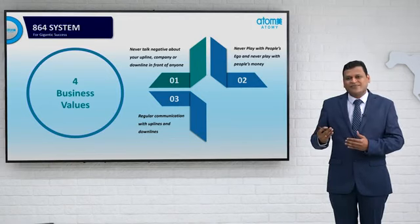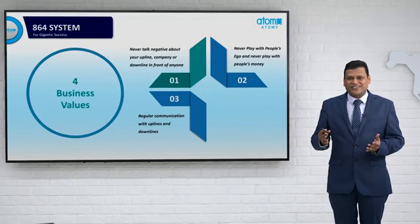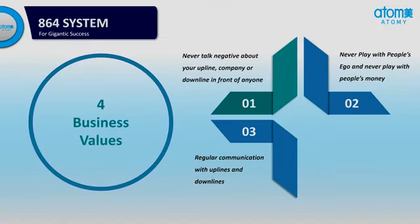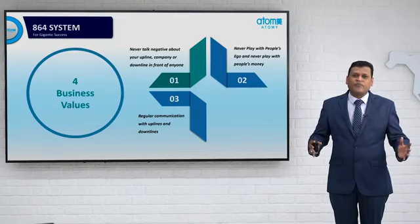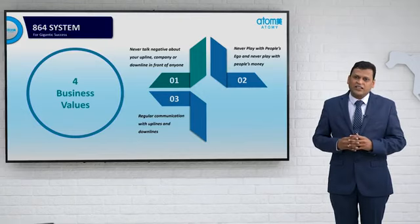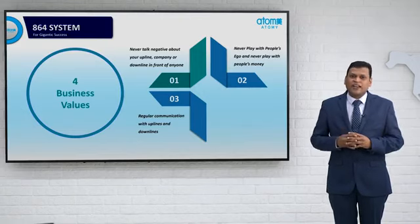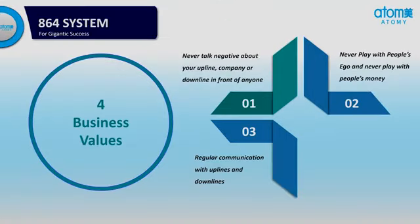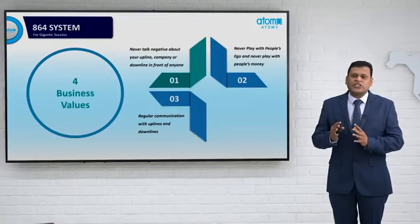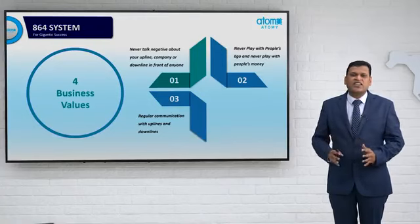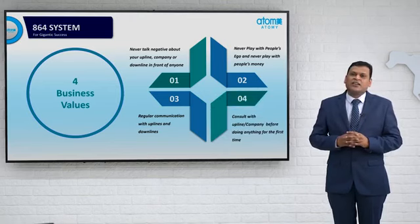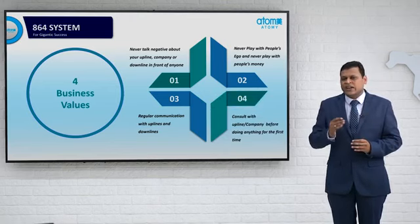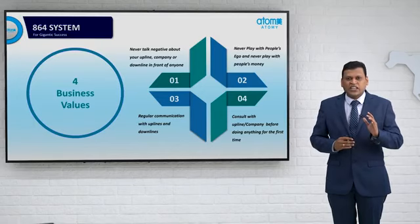The third important business value is continuous communication between upline and downline. We have come to know that some uplines block downline numbers, or some downlines block upline numbers. In our system, nobody will be successful without a balanced system — left and right should be balanced. For that, we need to talk with each other continuously. Continuous communication between upline and downline is most essential.